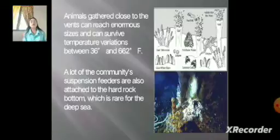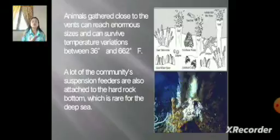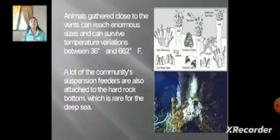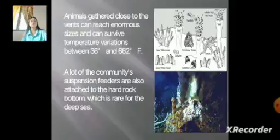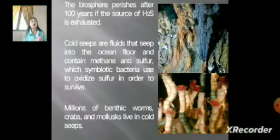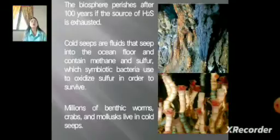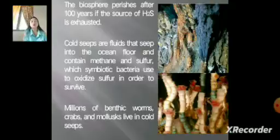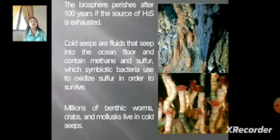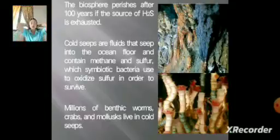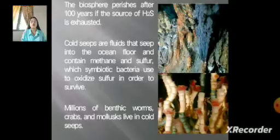Animals gathered close to the vents can reach normal size and can survive temperature variations between 36°F and 662°F. Many community suspension feeders are also attached to the hard rough bottom, which is rare for the deep sea. The biosphere near vents perishes after about 100 years if the source of hydrogen sulfide is exhausted. Cold seeps are fluids that seep into the ocean floor containing methane and sulfur, which symbiotic bacteria use to oxidize sulfur in order to survive.